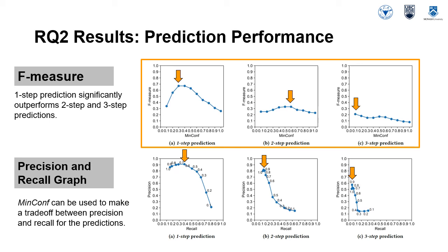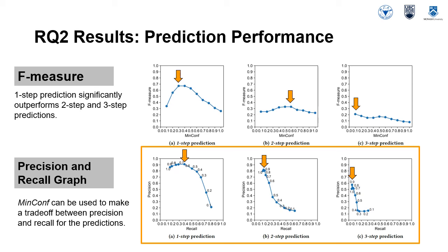The average F-measure of 1-step prediction is 0.48, which is 1.7 times higher than that of 2-step prediction and 3.4 times higher than that of 3-step prediction. Thus, 1-step prediction significantly outperforms 2-step and 3-step predictions. The three figures in the bottom present the resulting precision and recall graph for 1-step, 2-step, and 3-step predictions. Each point in each curve represents the average precision and recall based on patterns with min-conf ranging from 0.1 to 1, and the label for each point indicates the corresponding min-conf.